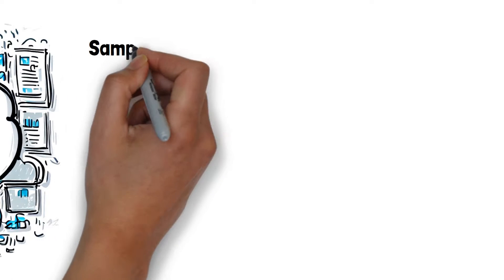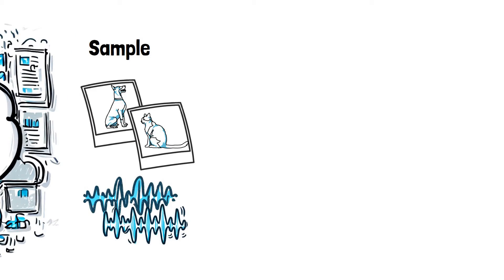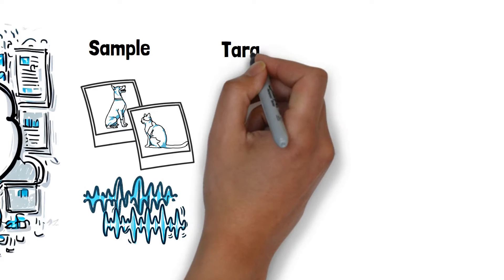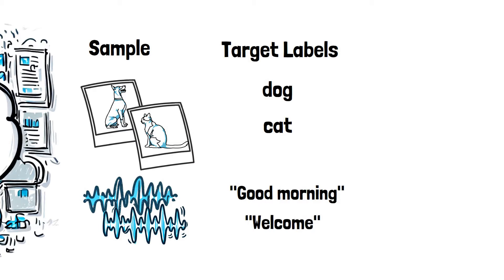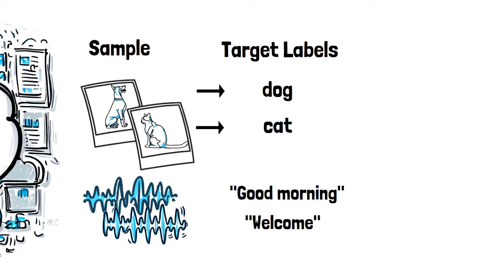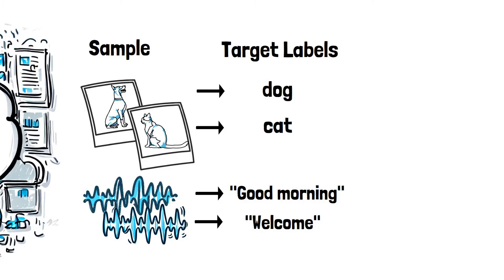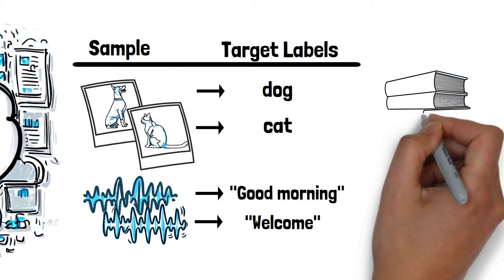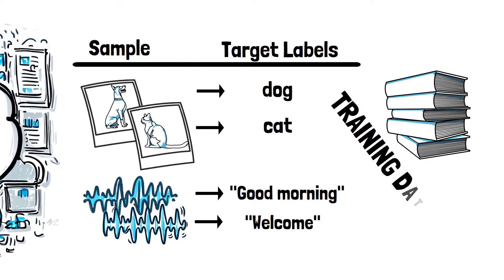For every piece of data, like an image or speech recording, we collect its corresponding target label or output. Think of it as pairing an image with its category or a speech clip with its transcription. These paired samples become the training data for our MLP to learn from.